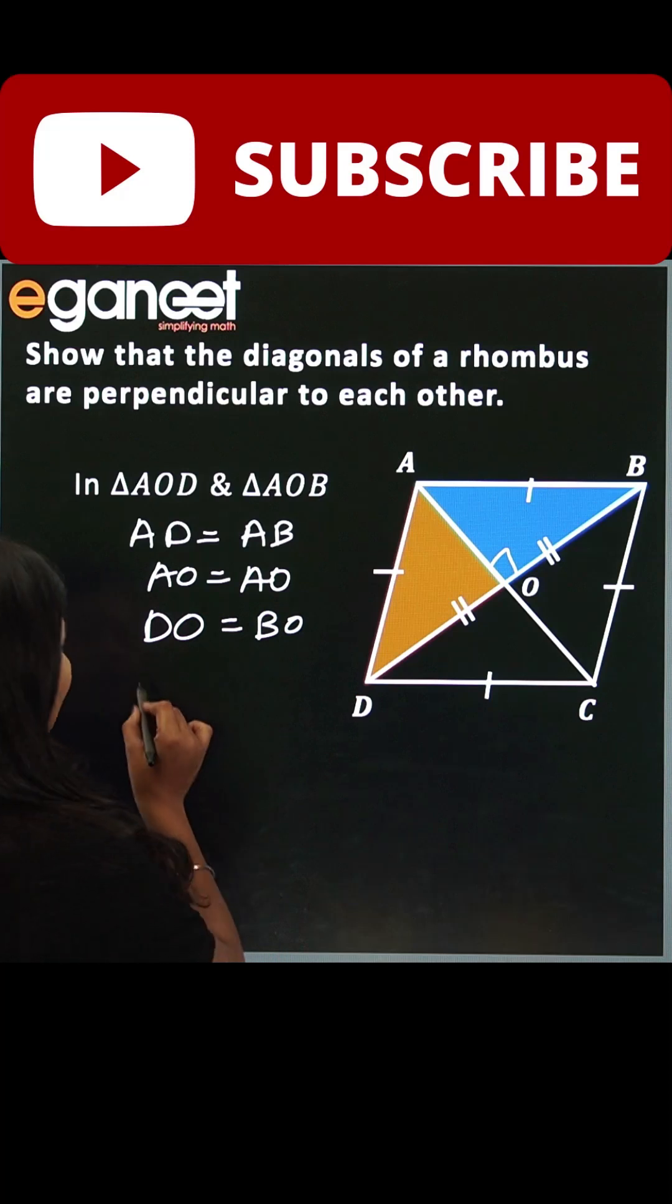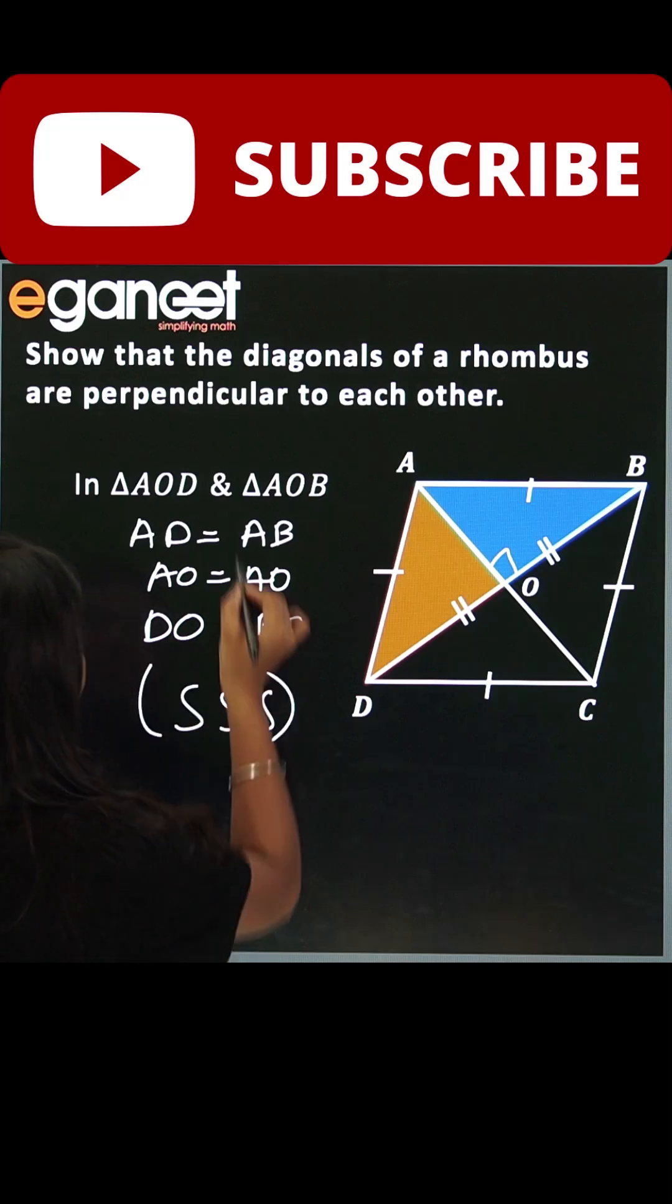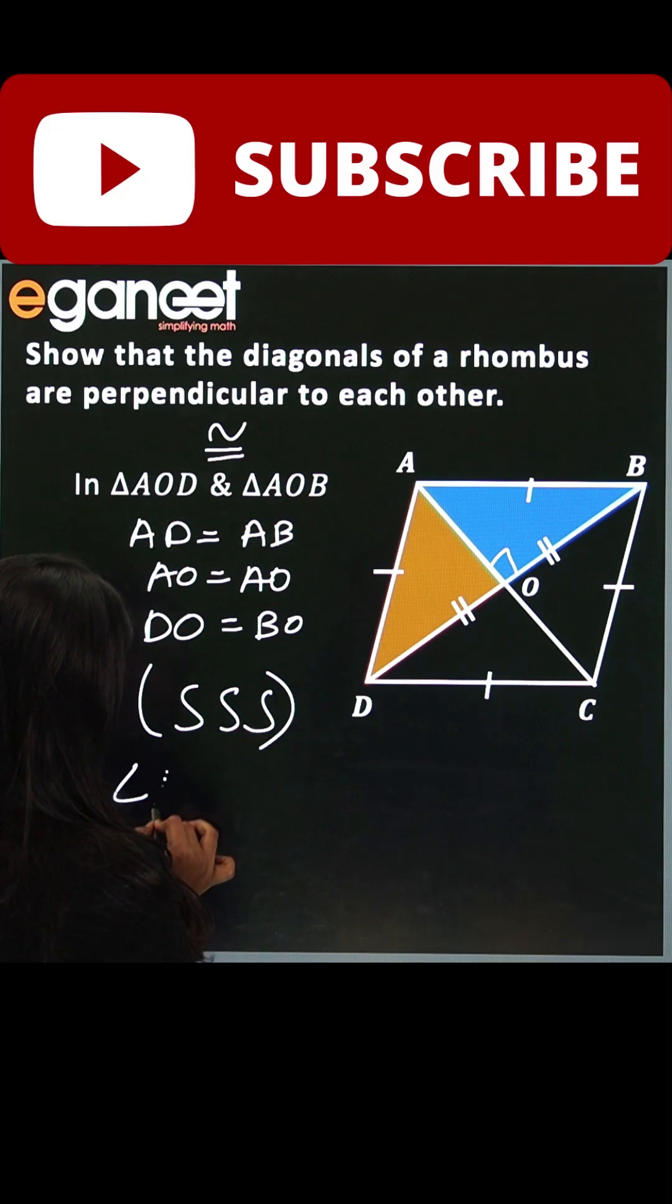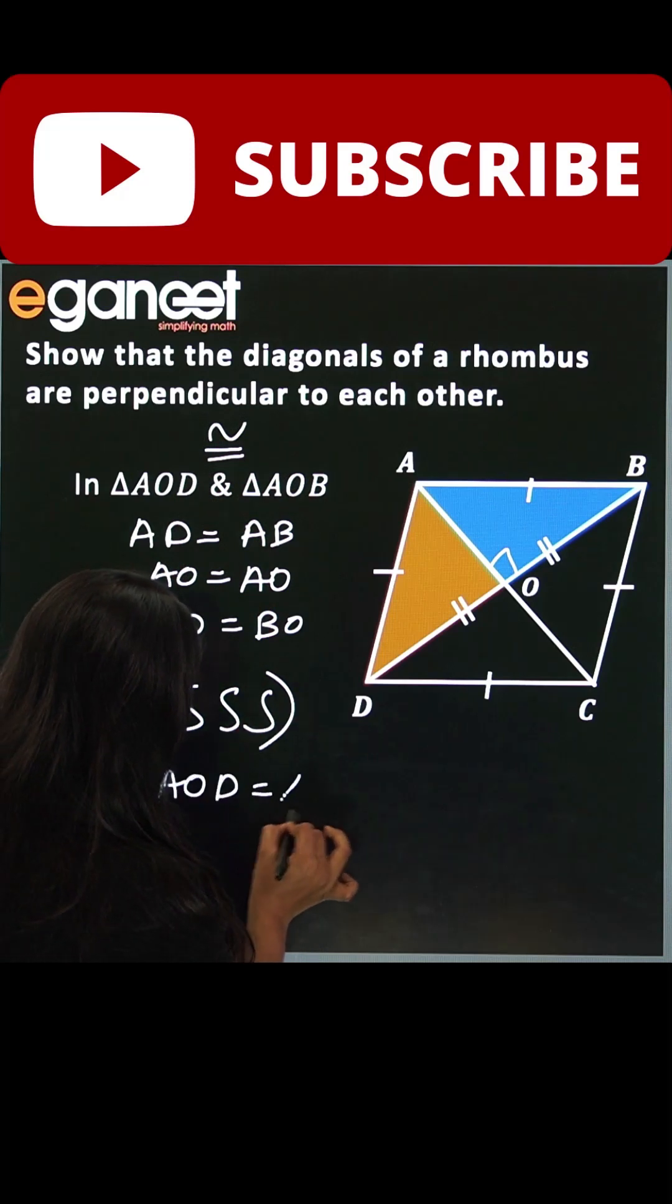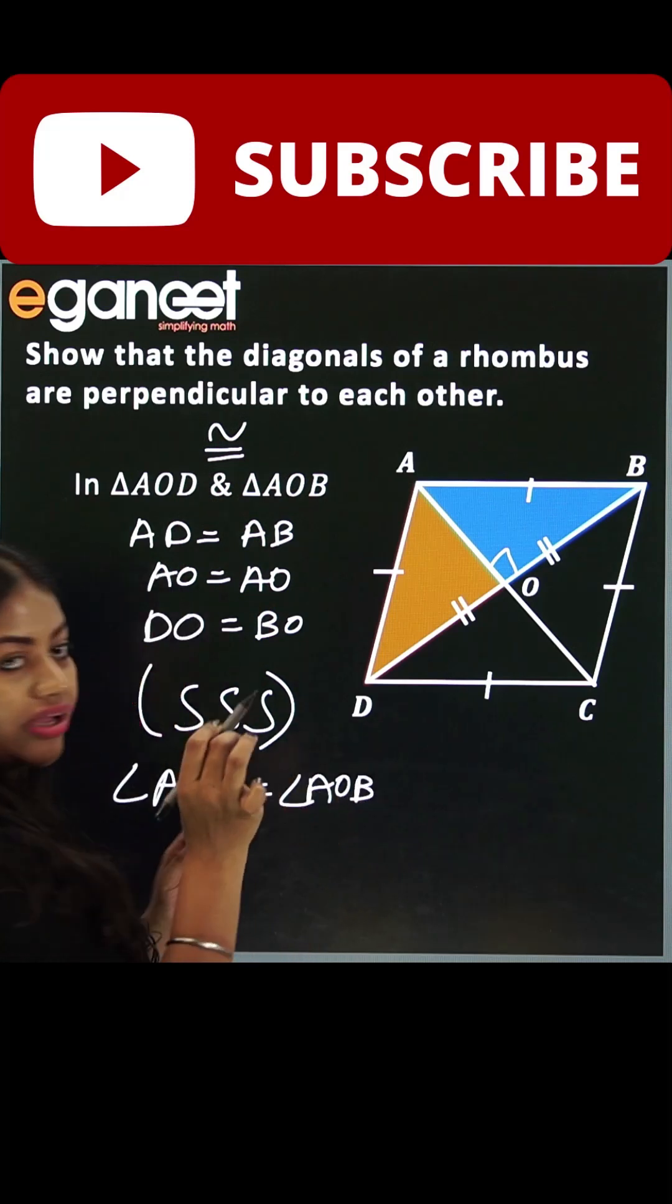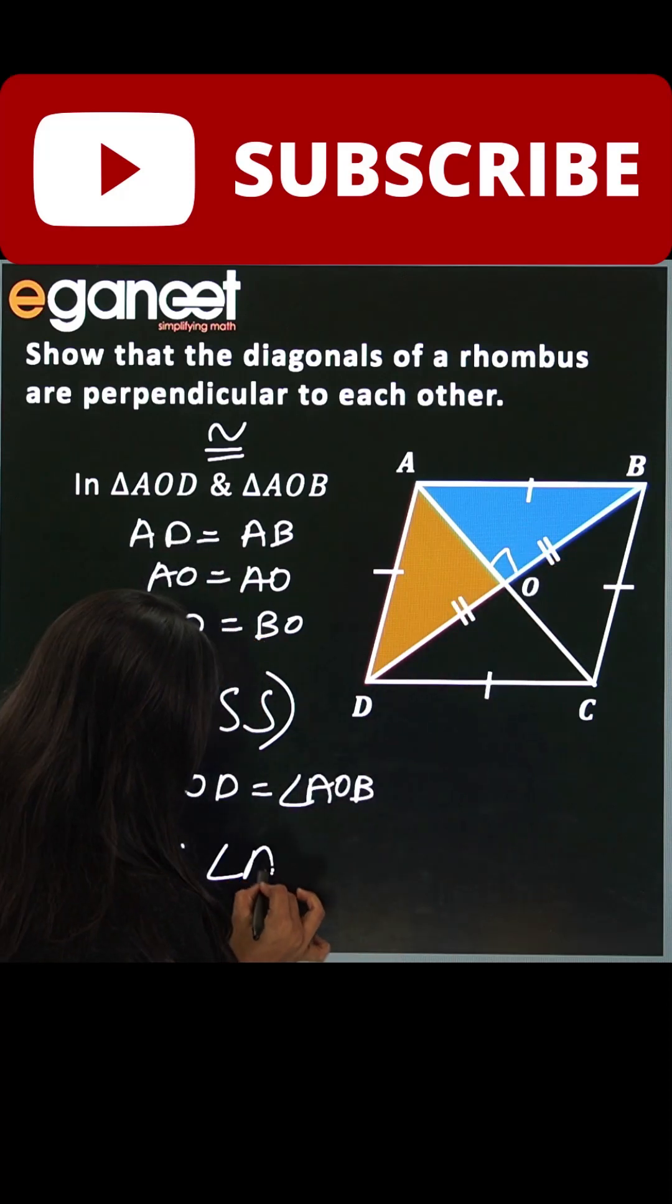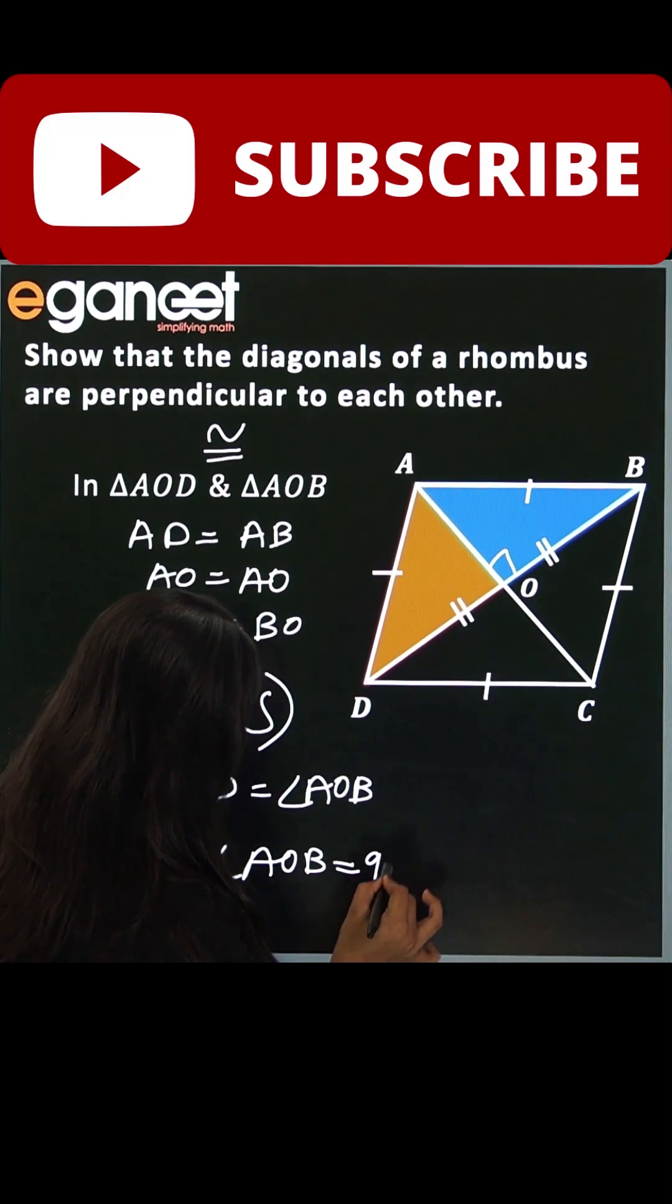Now with the help of SSS congruence rule, these two triangles are congruent. Now I can use CPCT, so angle AOD will be equal to angle AOB. Now you can see that these two angles are forming a linear pair. Therefore, angle AOB will be equal to 90 degrees.